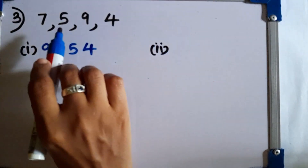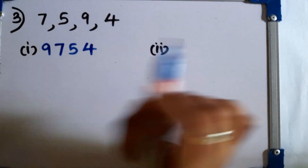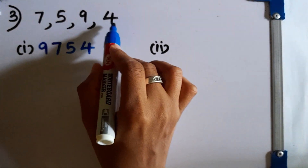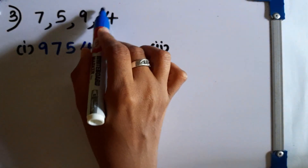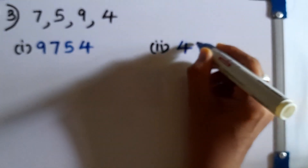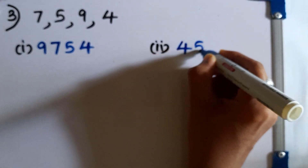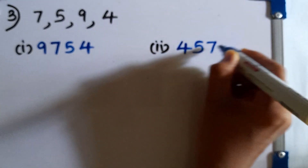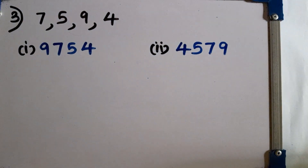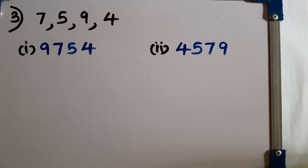Then, the second part: write the smallest possible number. We have to choose the smallest digit first — 4, then 5, 7, 9. So 4,579 is the smallest possible number we can write.